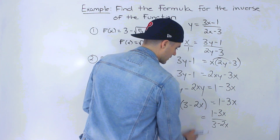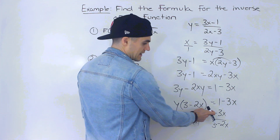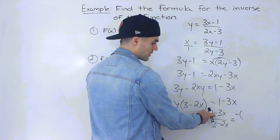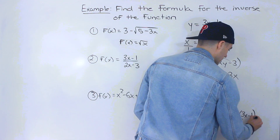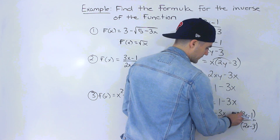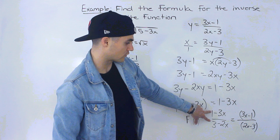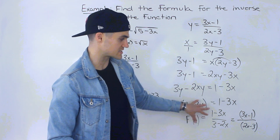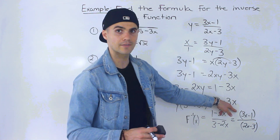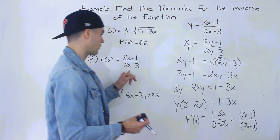Factor out y: y(3-2x) = 1-3x. Divide both sides by (3-2x): y = (1-3x)/(3-2x). That's the inverse. If you want to make it look nicer, factor out a negative from both numerator and denominator: the numerator becomes -(3x-1) and denominator becomes -(2x-3), the negatives cancel, giving (3x-1)/(2x-3). So either form is correct — some textbooks do that extra step, but they're the same thing. So f⁻¹(x) = (1-3x)/(3-2x), or equivalently (3x-1)/(2x-3).